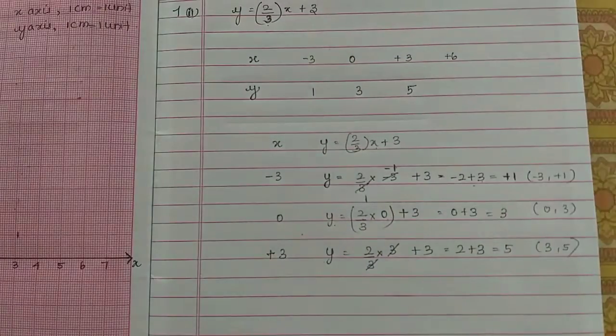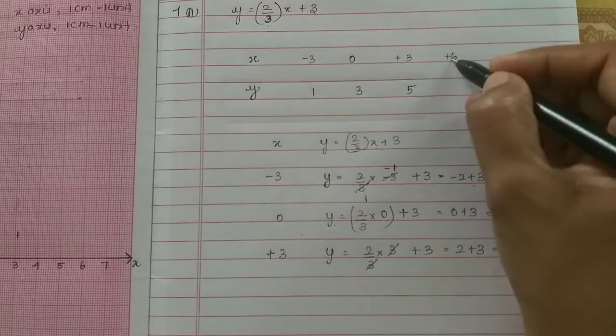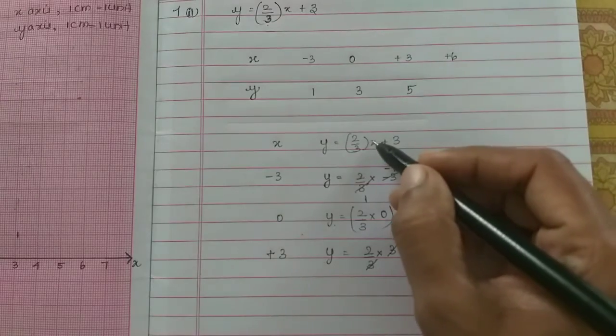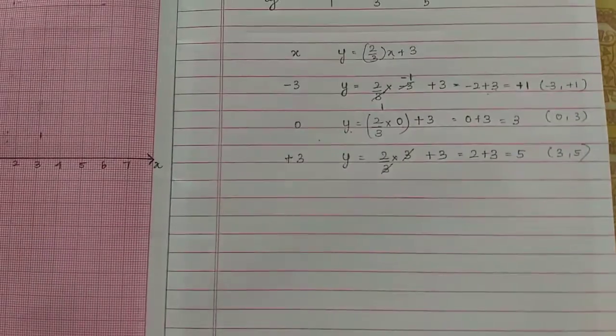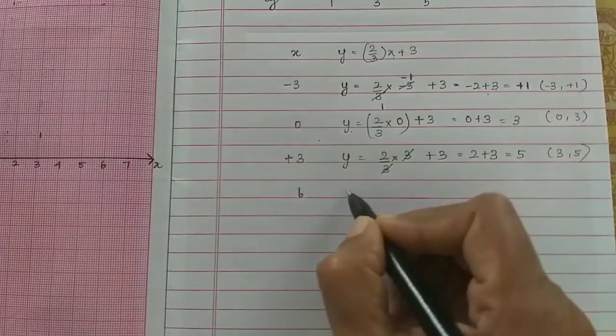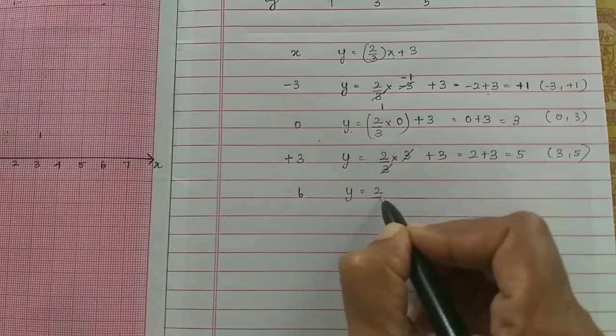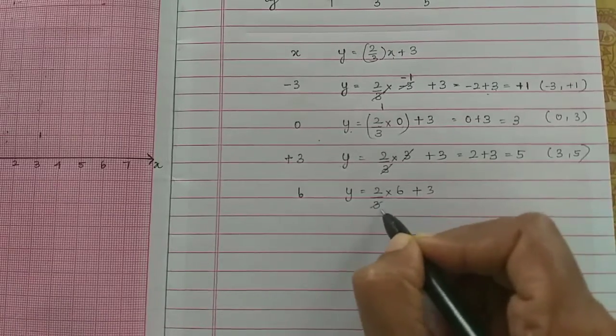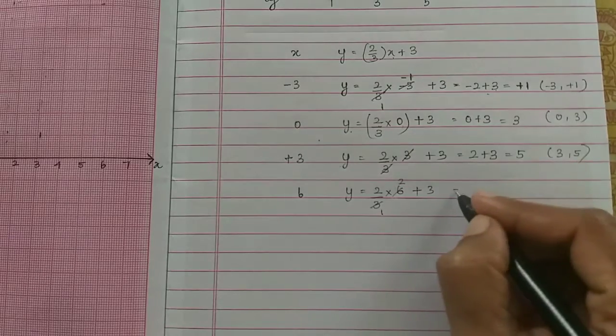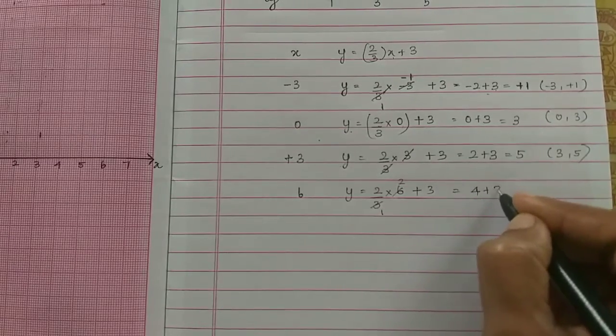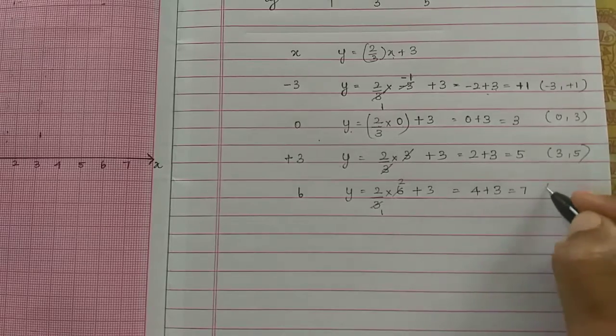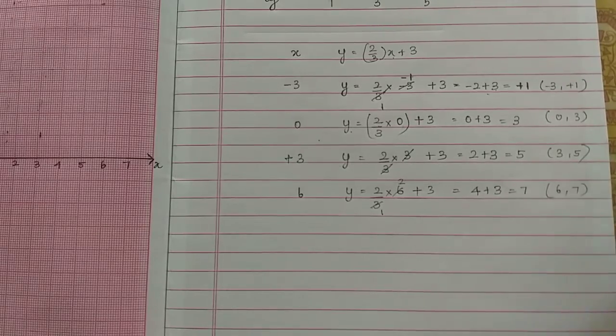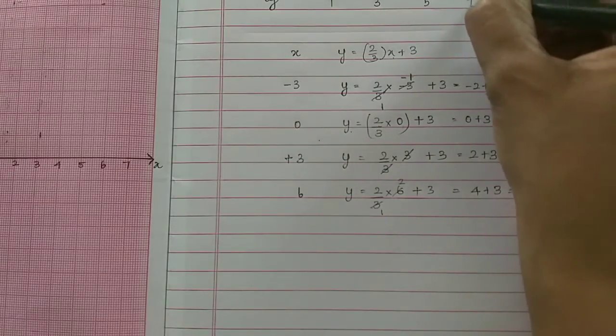Next we have plus 6. So you can substitute 6. I will put it 6. So y is equal to 2/3 times x plus 3. So 3 cancels with 3, 2 times 2 is 4, 4 plus 3 equals 7. Then this point is 6, 7.